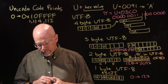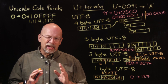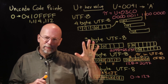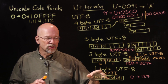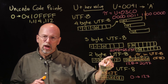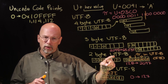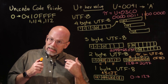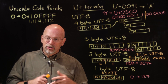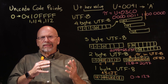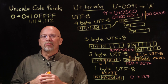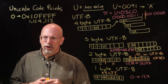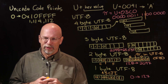In the next episode, we're going to look at some patterns of ones and zeros that have been encoded in Unicode Transformation Format and figure out what code point they represent, so we can translate them to the character you should be seeing on screen.